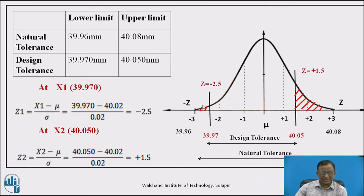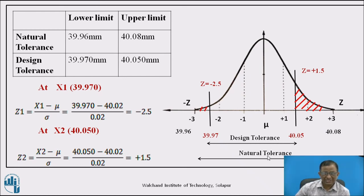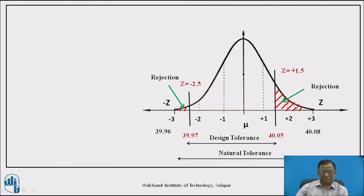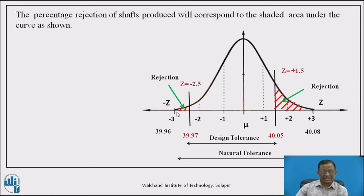The rejected shafts correspond to the shaded areas under the normal curve beyond Z = -2.5 and Z = +1.5. Since design tolerance is less than natural tolerance, rejection will definitely occur. The percentage of rejection equals the total shaded area under these two tails. To find the accepted area, we use the standard normal table to find the area from Z = 0 to 2.5 and from Z = 0 to 1.5.